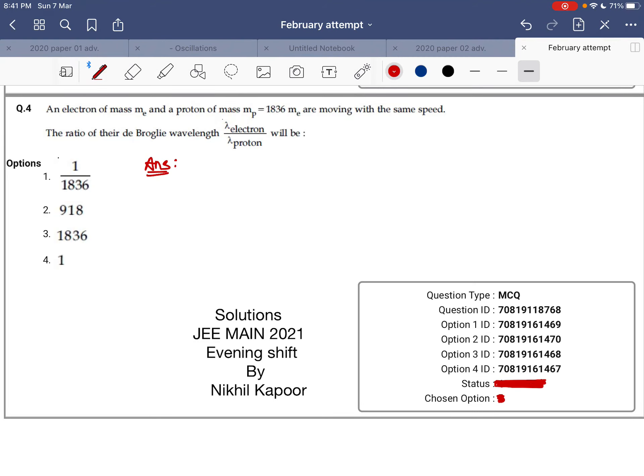Let's start with the fourth example. An electron of mass Me and a proton of mass Mp equal to 1836 Me are moving with the same speed. The ratio of their de Broglie wavelength will be.